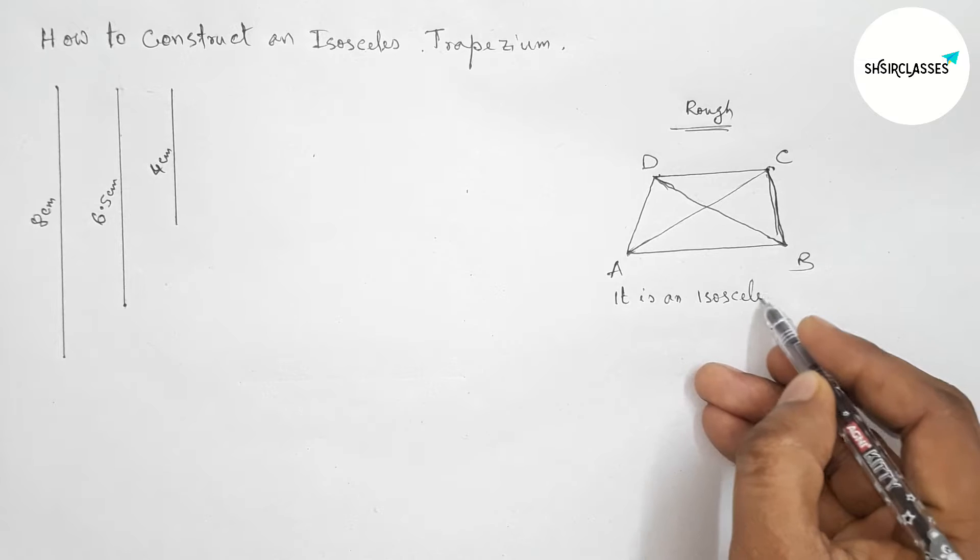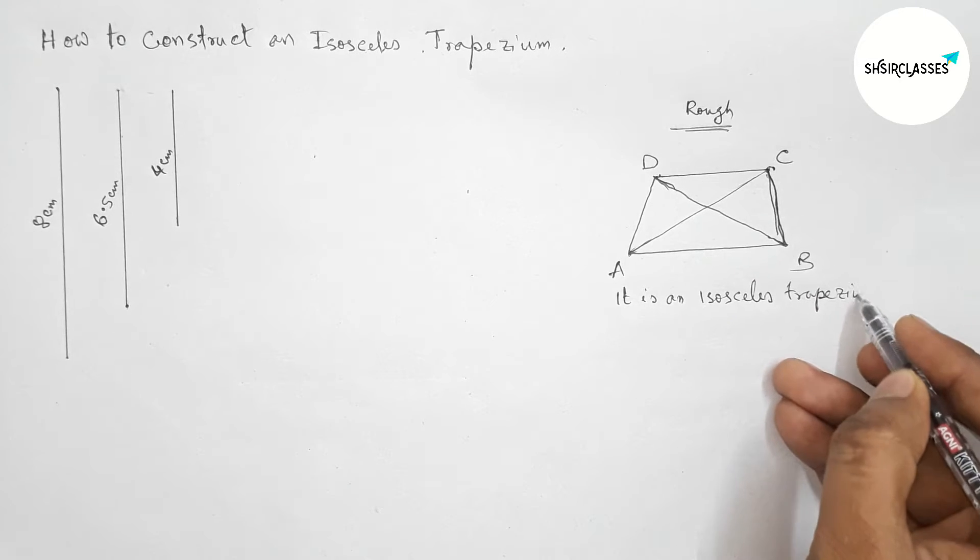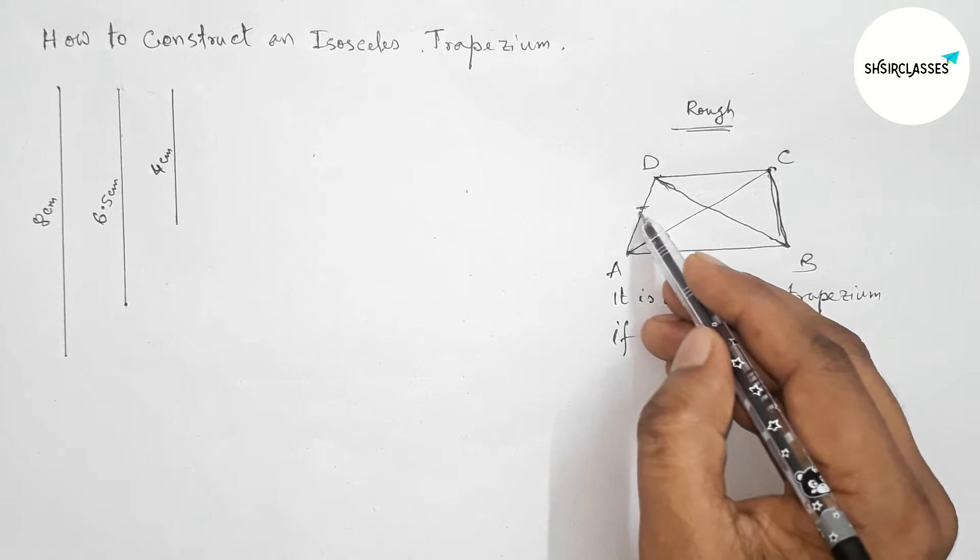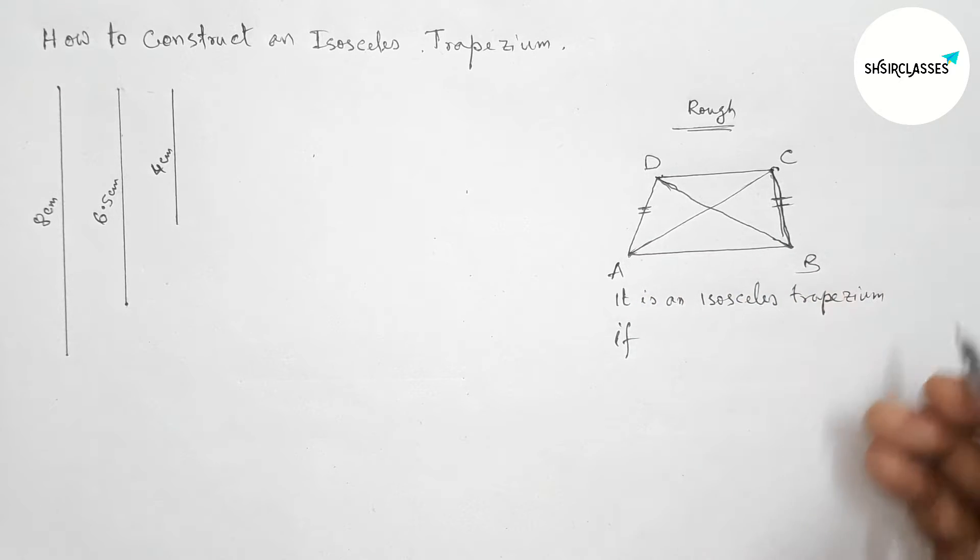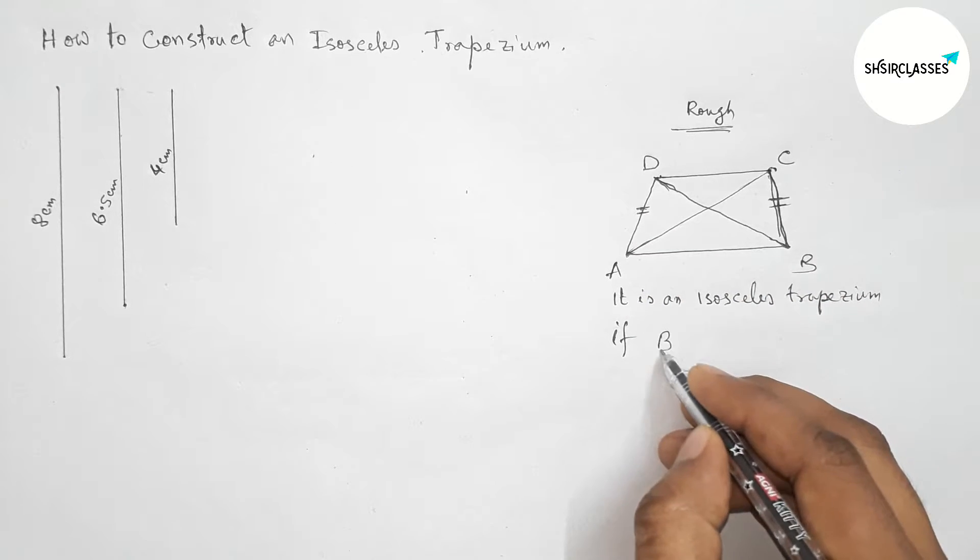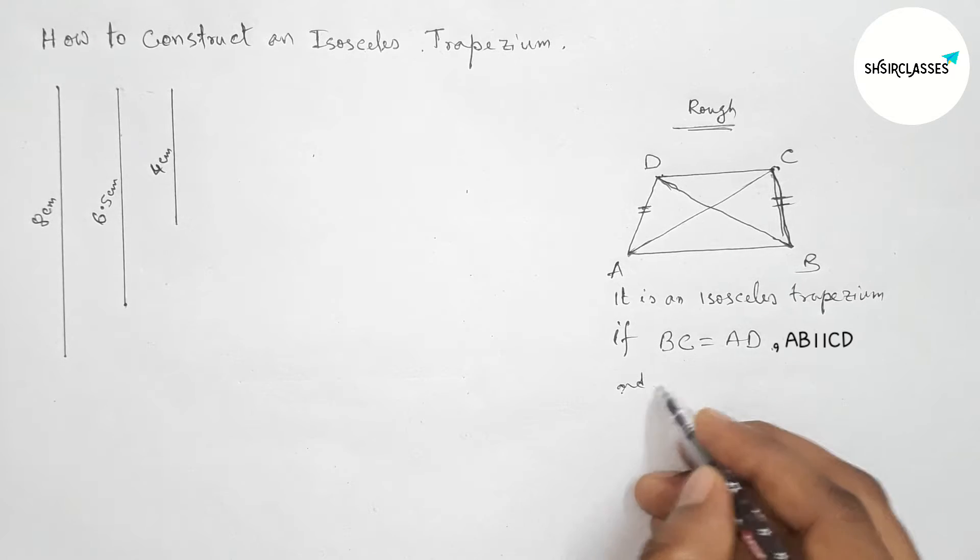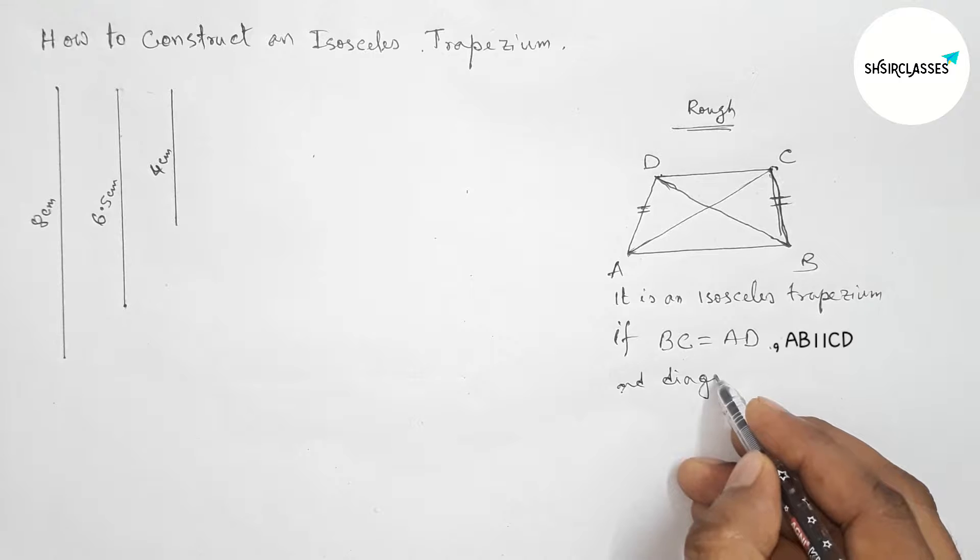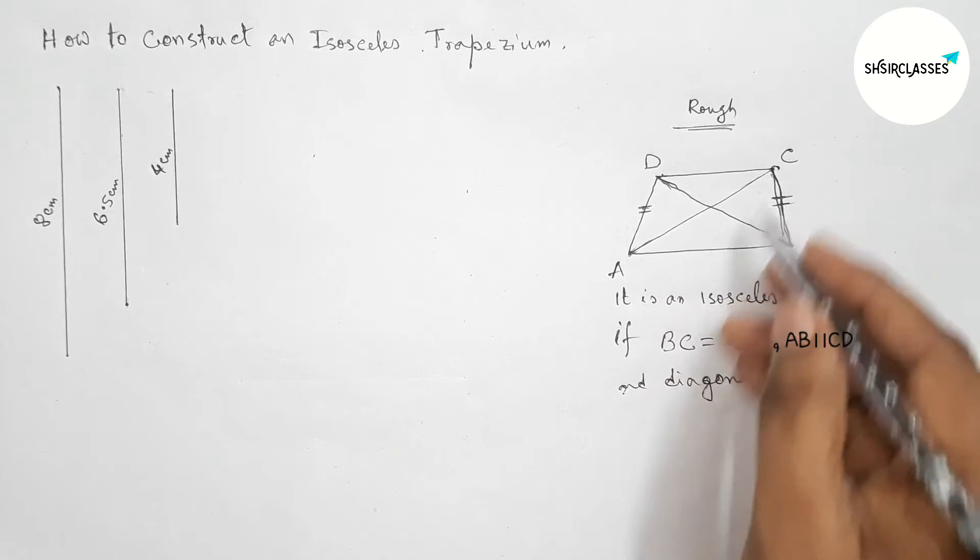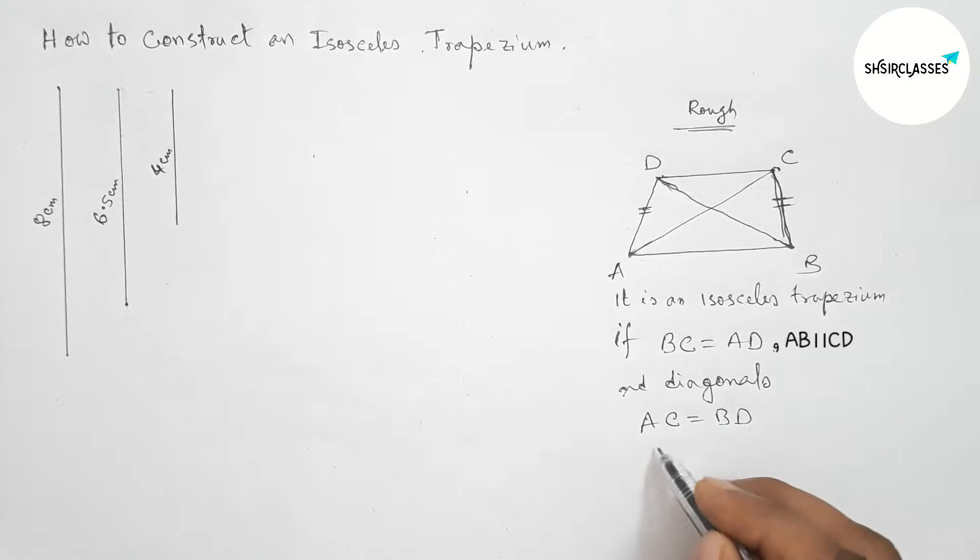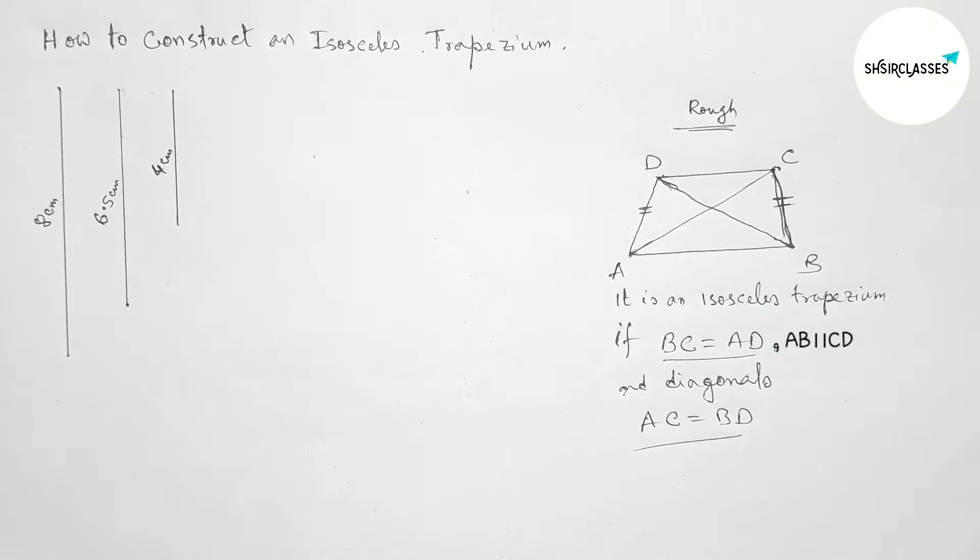Okay, so now we can say that this is an isosceles trapezium if two sides, so here AD and BC, if AD and BC are equal and AB parallel to CD, and also the two diagonals AC equal with BD. So these are three conditions.